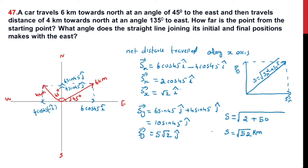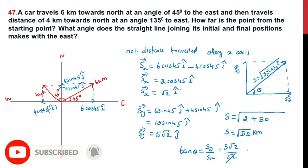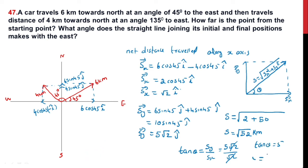For the angle that the straight line makes with the east, tan θ = Sy / Sx = 5√2 / √2 = 5, so θ = tan⁻¹(5). This is the direction, and √52 km is the magnitude. Hope you understood — thank you!